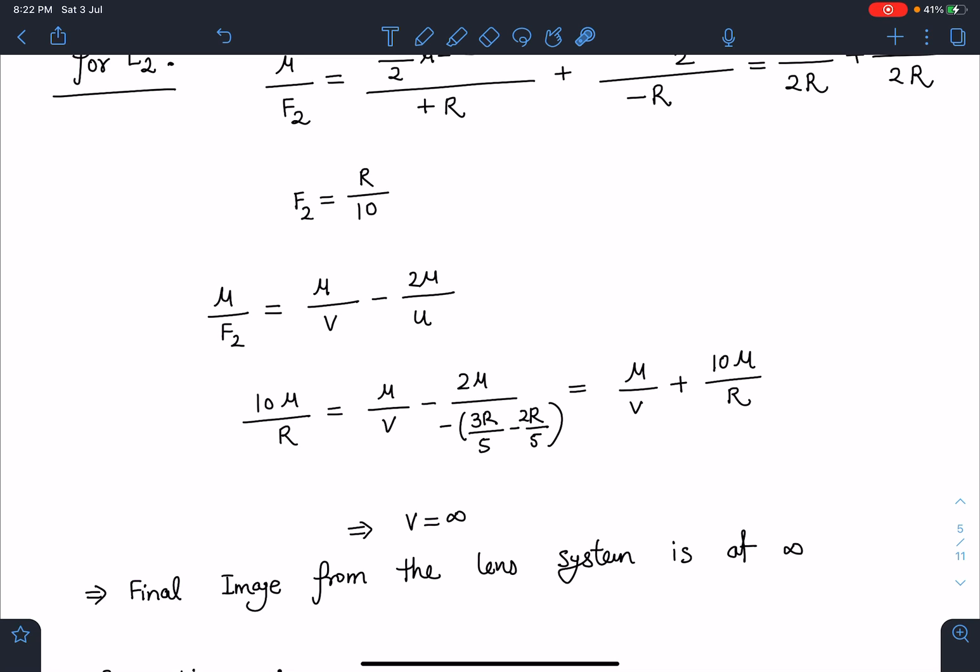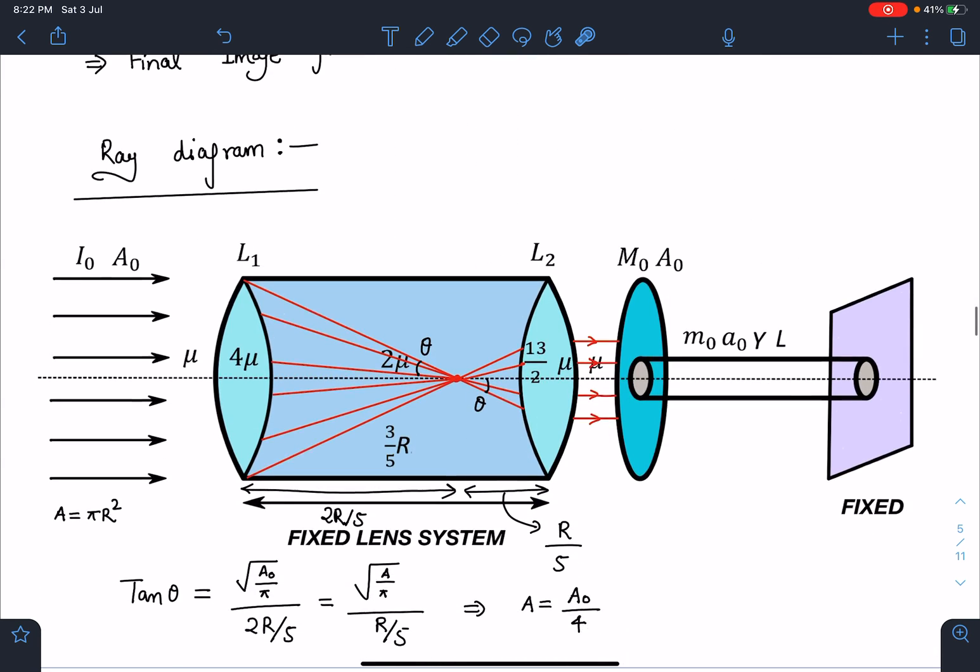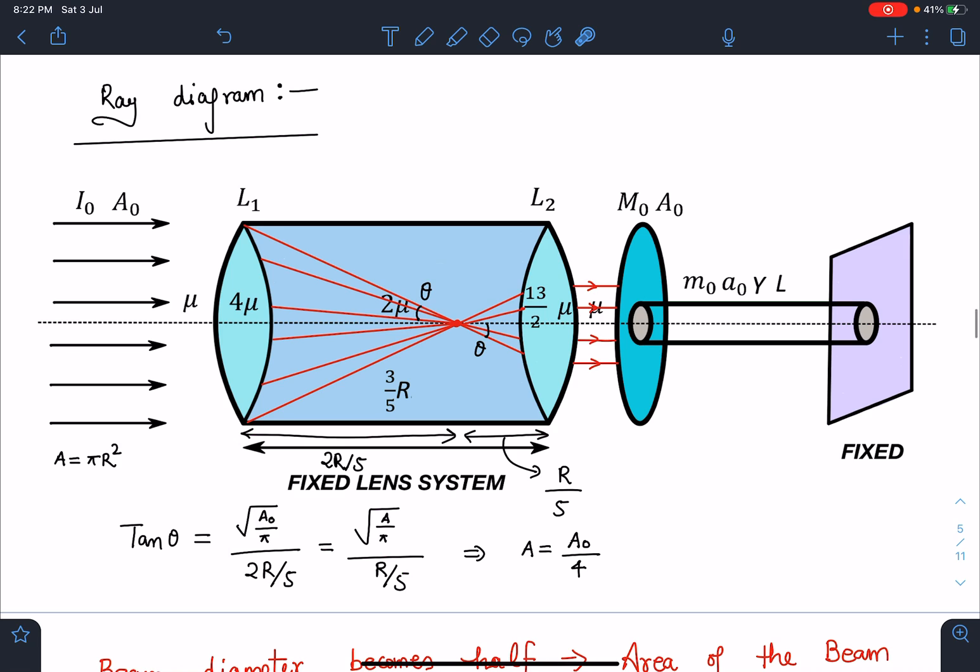Beam comes parallel, converges, and then behaves like an object for the second lens. After refraction from the lens, it becomes a cylindrical beam again. Ray diagram-wise, you can see these light rays are coming at a distance of 2R/5. All these light rays are converging, and after that it will behave like object for the next part. They are becoming a parallel beam of light again.